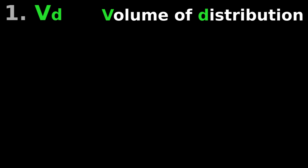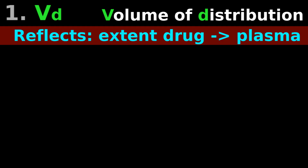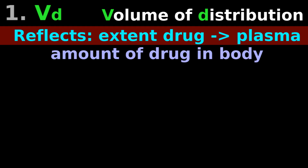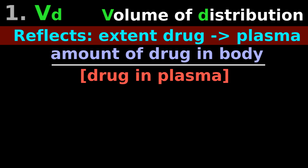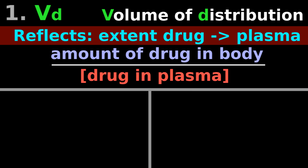VD means volume of distribution, reflecting the extent a drug gets into plasma. The calculation is amount in body divided by concentration of drug in plasma.